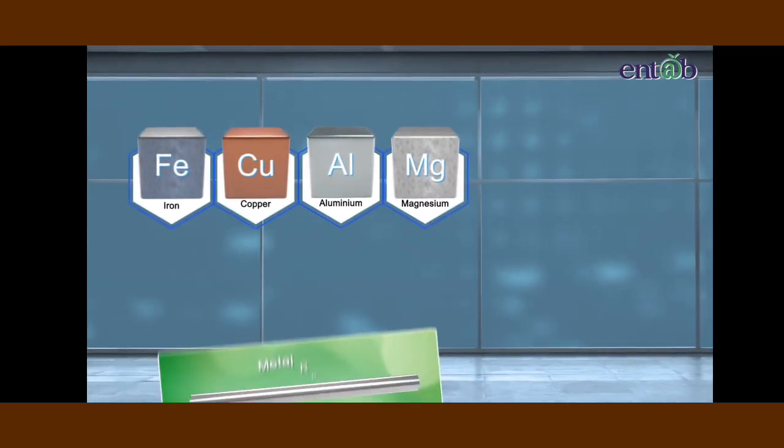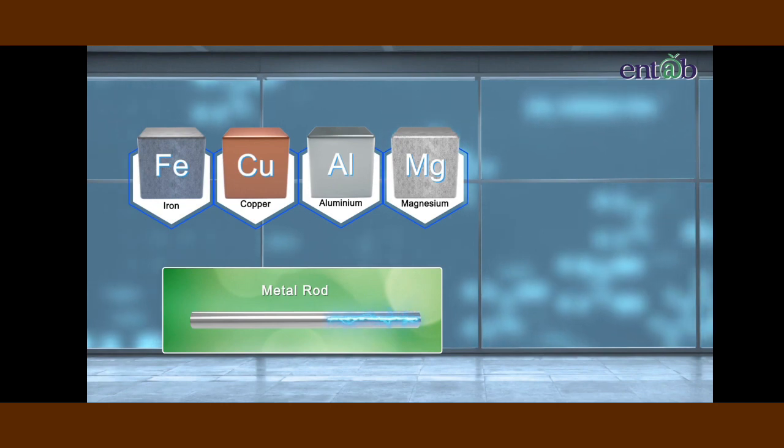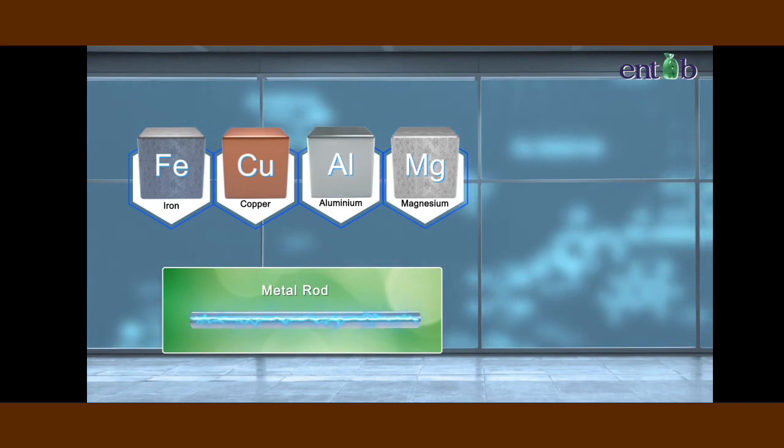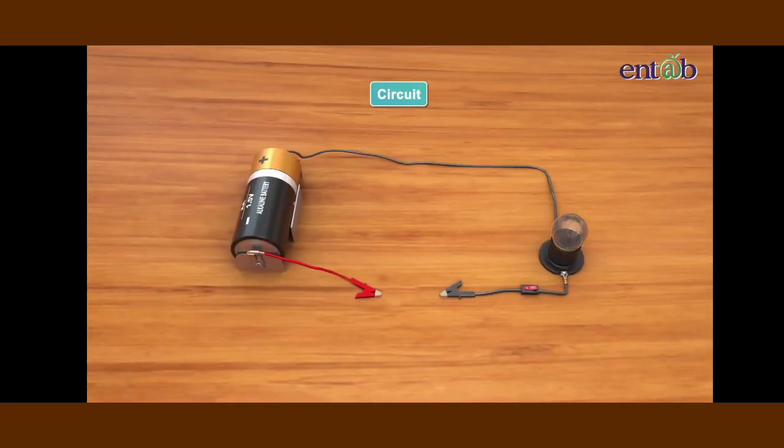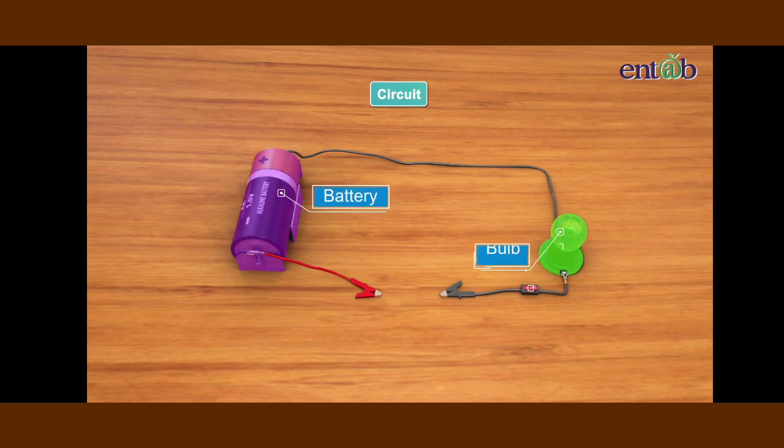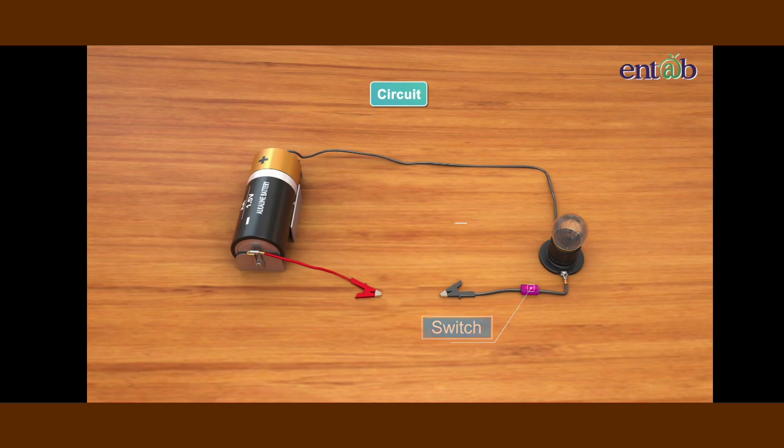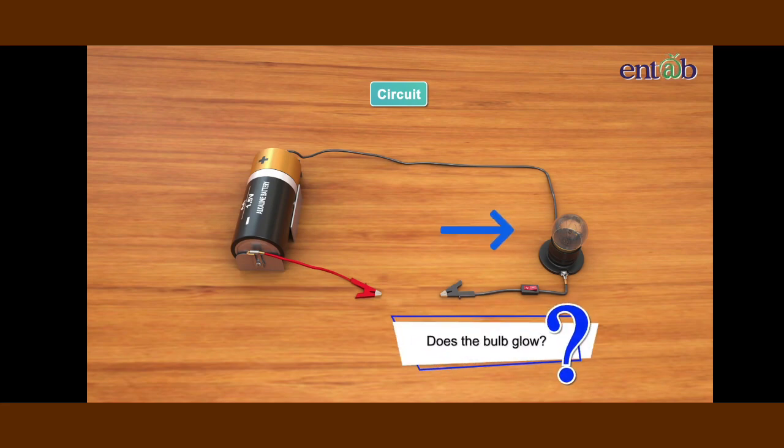It means that metals can conduct electricity from one place to another within the metal surface. Let us perform an activity to understand this property. We shall start by setting up a circuit by connecting a battery to a bulb through a switch using connecting wires made up of copper with crocodile clips. Look at the circuit here. We are now ready for the activity.